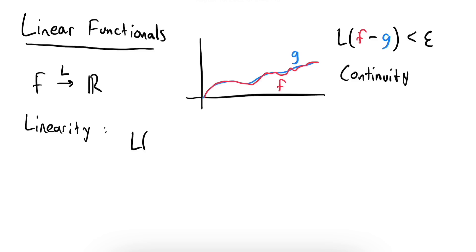Linear functionals also need to have the linearity property, which should look familiar if you've seen some linear algebra. This just says that the linear functional applied to a constant times f is the same thing as that constant times the linear functional of f. Similarly, if you take the linear functional of the sum of two functions, in other words, you take the measurement of a sum, you should get back the sum of the measurements, or the sum of the functionals.